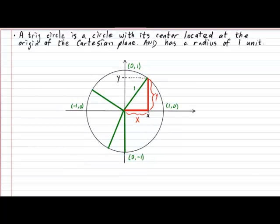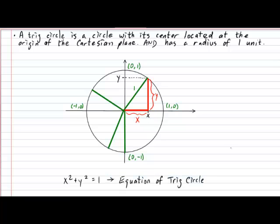Using the Pythagorean theorem as it applies to right triangles allows us to conclude that for any right triangle inscribed inside the trig circle using the radius as its hypotenuse — and keep in mind that this radius will always measure one unit — it holds true that the horizontal length squared plus the vertical length squared will always equal 1. And this leads us to what is known as the equation of the trig circle.